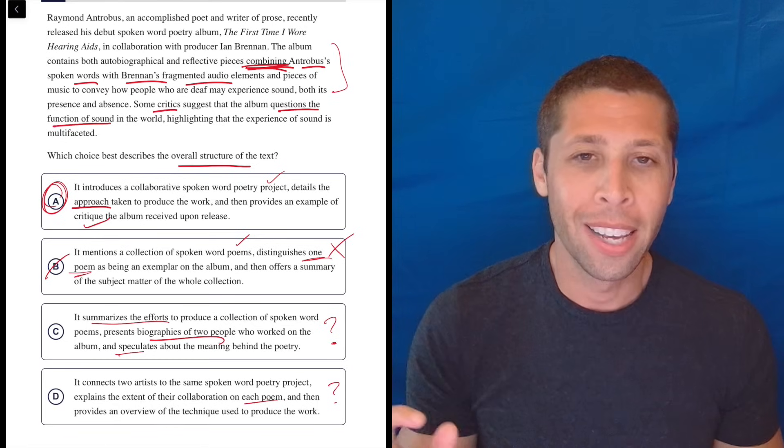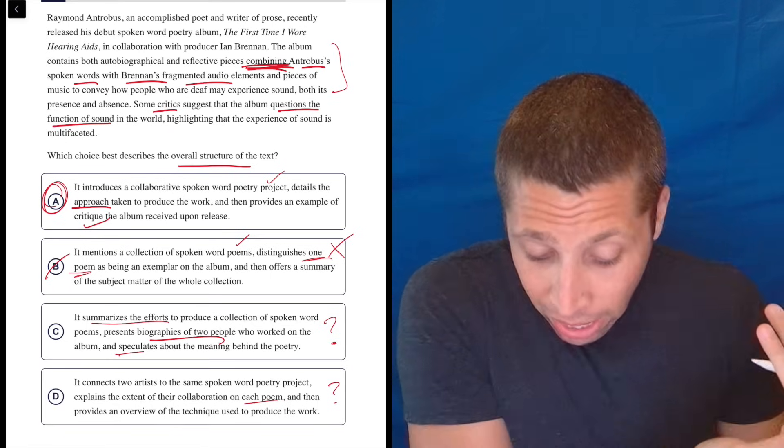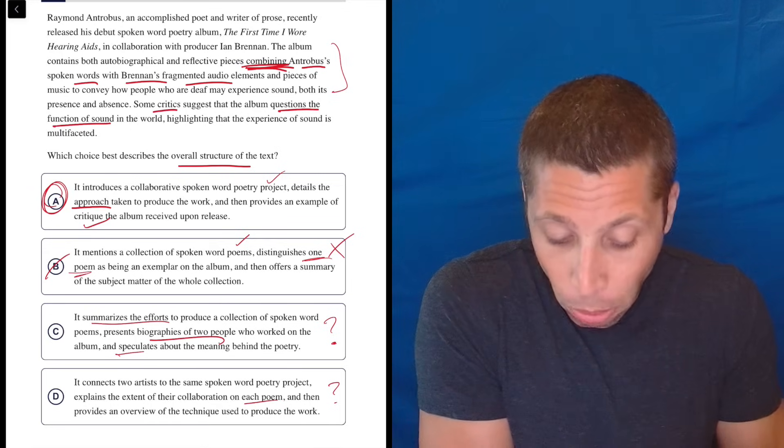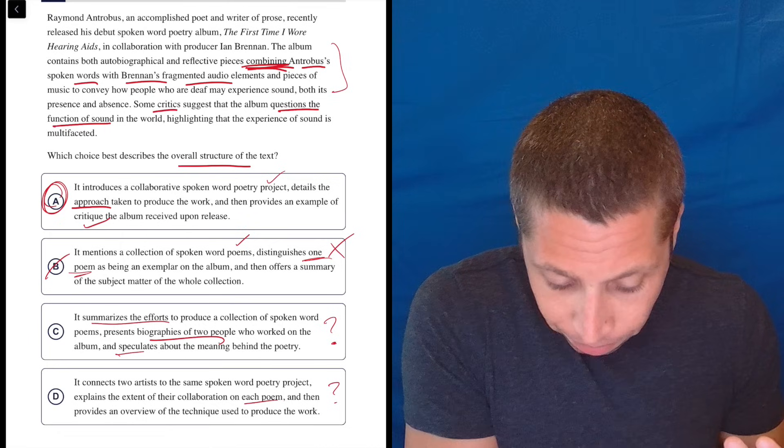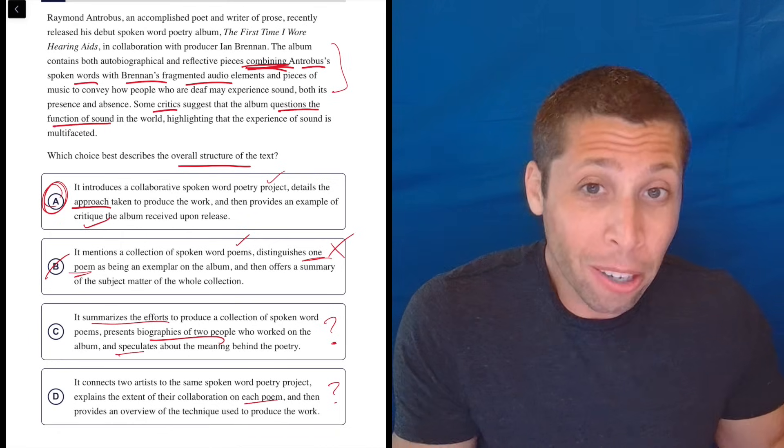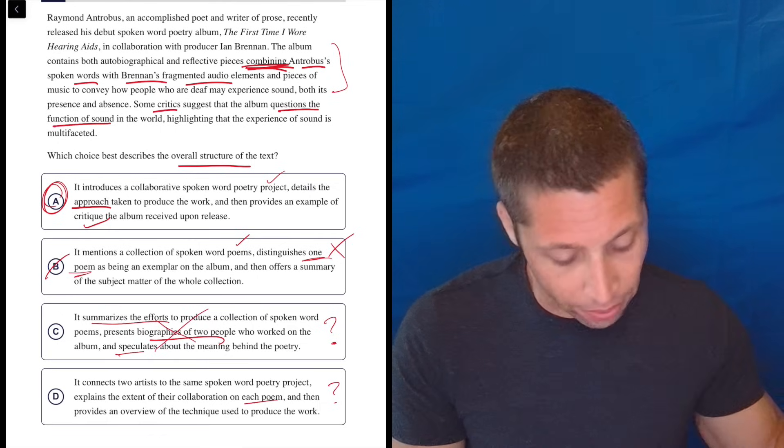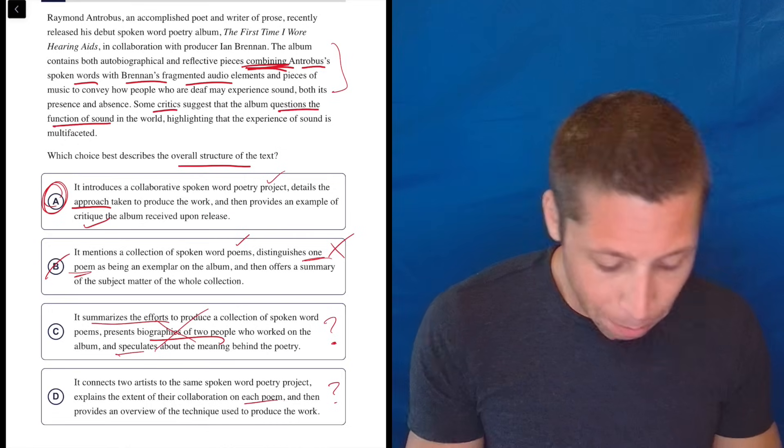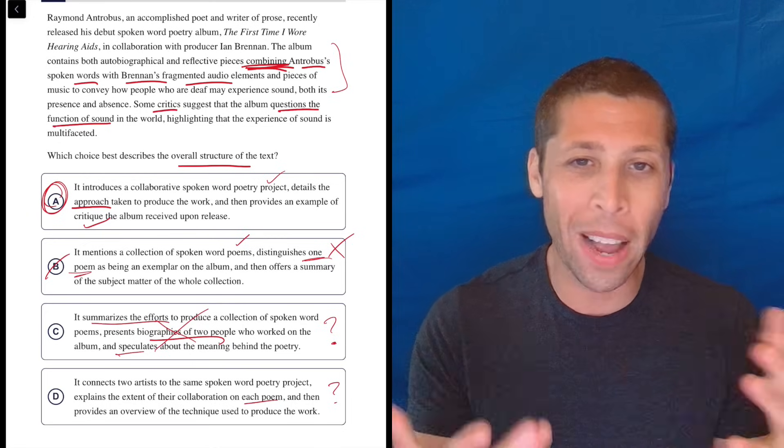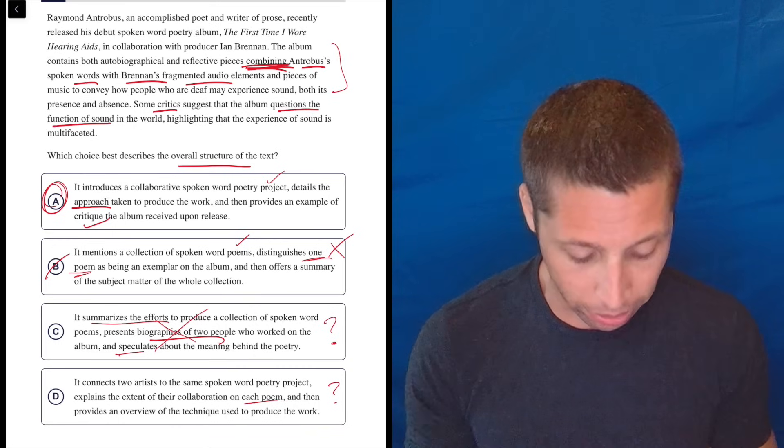I do not think it presents biographies. A biography is like a long story about who a person is. If you ever go to like a bookstore and look at the biography section, how long are those books? They're big, thick books. This is saying that Antrobus is an accomplished poet and writer of prose. I don't even know how old he is. I don't know anything about this guy than just this one spoken word poetry album he has. Who the heck is Ian Brennan? He's a producer. Is that a biography? He's just saying someone's job title? I don't think so. So I would say this right here is the part that kind of fails for me. And speculates about the meaning? Maybe, but you got to get the fact that it's critics doing that. I don't love the last part, but I think it's that second part in the middle of choice C that really knocks it out for me.